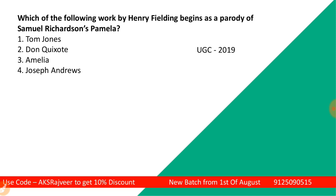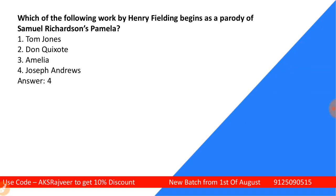This was also part of your UGCnet exam in the year 2019: Which of the following works by Henry Fielding begins as a parody of Samuel Richardson's Pamela? Options are Tom Jones, Don Quixote, Amelia, or Joseph Andrews. The correct answer is Joseph Andrews by Henry Fielding — that is known as the parody of Pamela. One more thing: Joseph Andrews is also a kind of parody of Don Quixote. Must remember these two points.